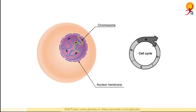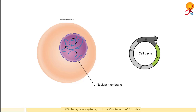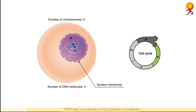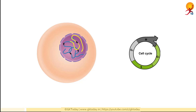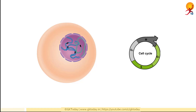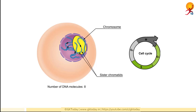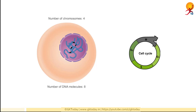During the G1 phase, cells possess the standard diploid number of chromosomes — in this example, 4. Each chromosome contains one DNA molecule. During the S phase, each DNA molecule is copied or replicated and the two sister chromatids remain joined. Thus, the number of DNA molecules doubles to 8 during the S phase, but the number of chromosomes is still 4. During the G2 phase, both the number of chromosomes and the number of DNA molecules remain constant.